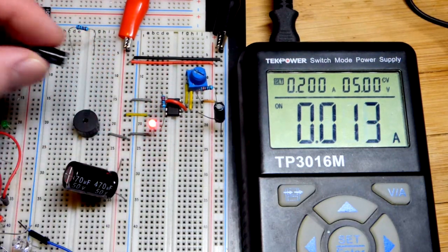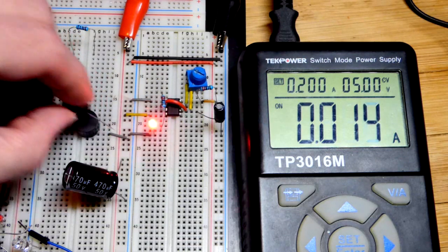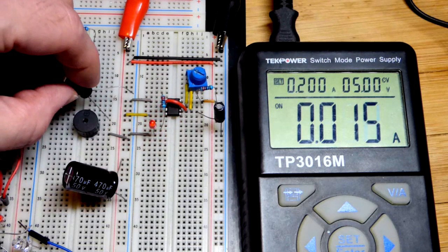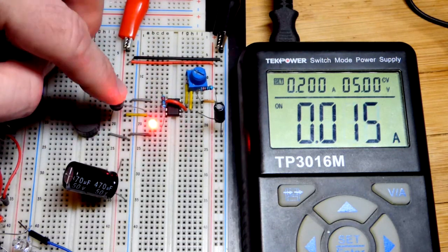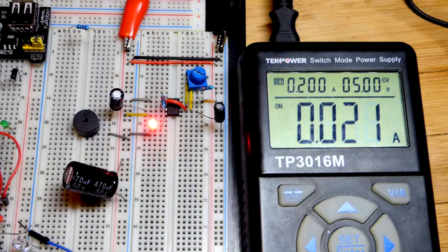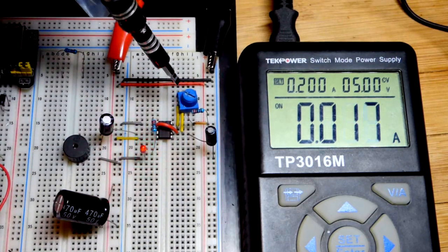We need to put the negative side of the capacitor to the passive buzzer because that is headed towards ground right there. So I'll go up three rows right there, and you can see that it's clicking faster.